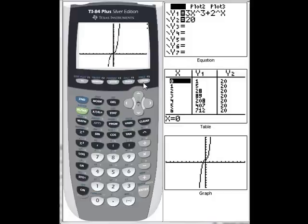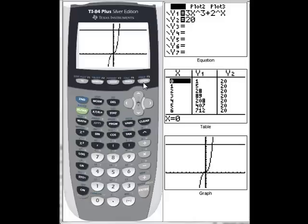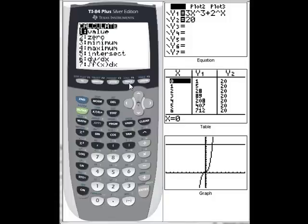So first we get our function, and then we've put in a horizontal line every place where the output is 20. So that intersection is the value we're looking for. So we can do second, calculate, and we want the intersection.